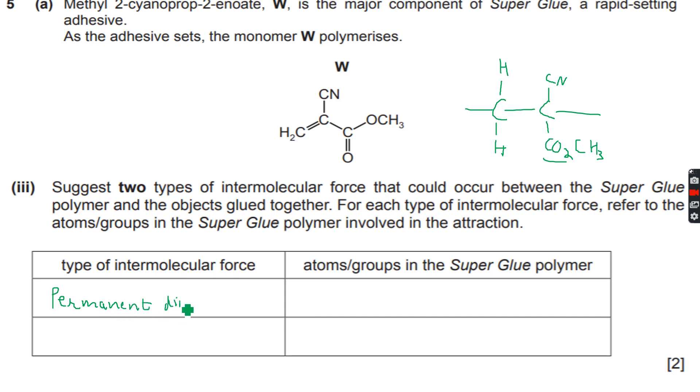Permanent dipole-dipole attractions, and these will be because of the CN groups and because of the CO2CH3 group, which is the ester group. Or we can just say because of the CO2 group. And then we will have van der Waals forces because of the main polymer chain, because the main polymer chain is carbon and hydrogen only.